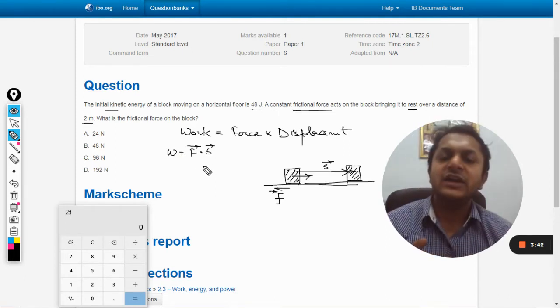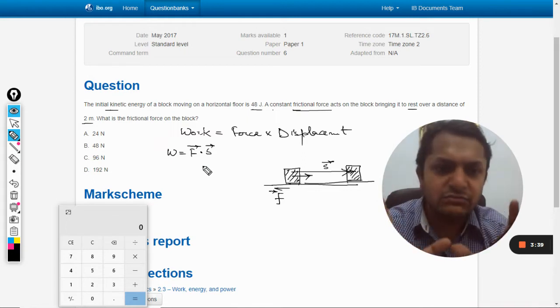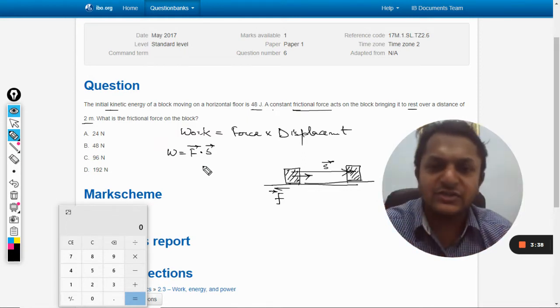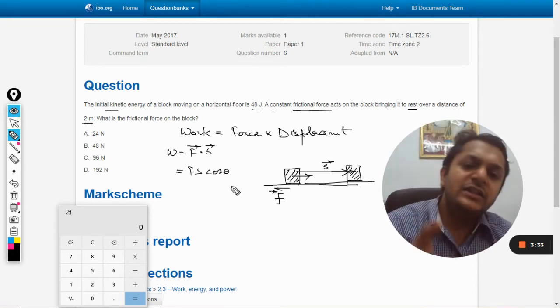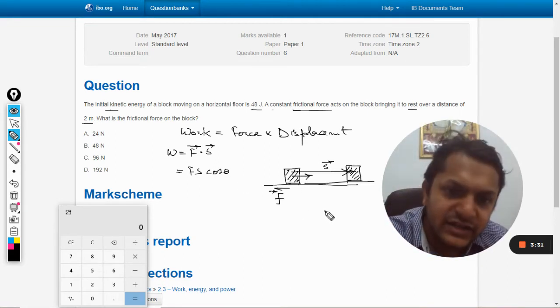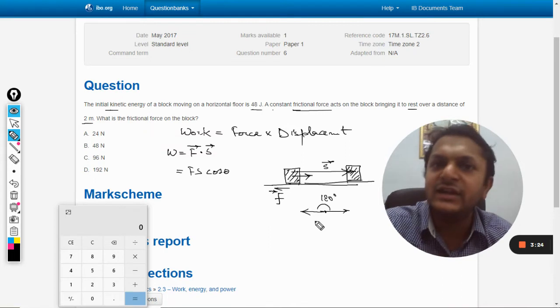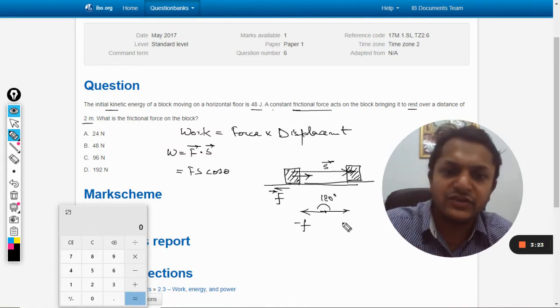If you don't know that, there's nothing to worry about. We have the formula W = F·s·cos(θ). The theta here is 180 degrees - the displacement is in this direction, force is in the backward direction. This is friction, this is displacement.